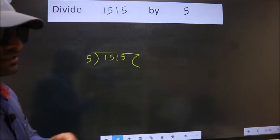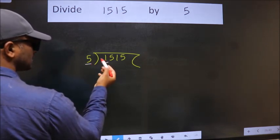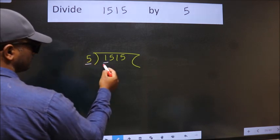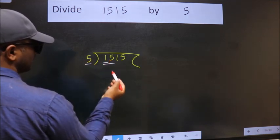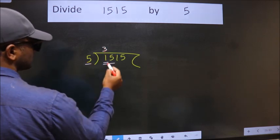Next. Here we have 1, here 5. 1 is smaller than 5. So, we should take 2 numbers: 15. When do we get 15 in the 5 table? 5 times 3 is 15.